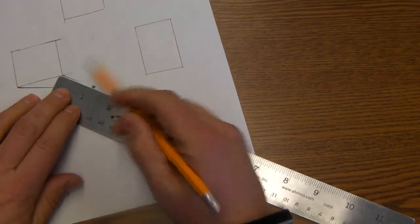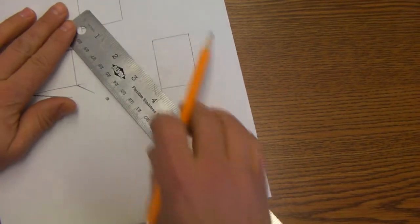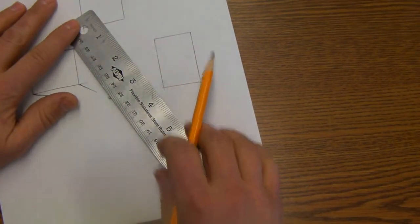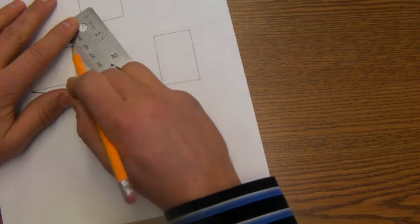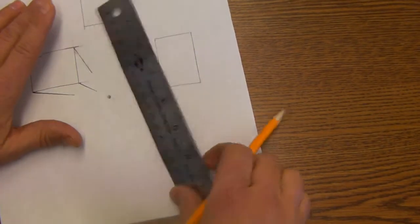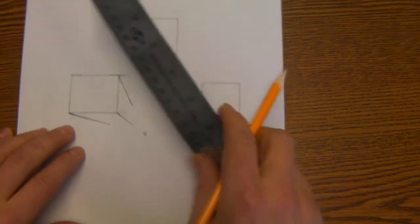I'm going to repeat that. Remember, try not to have your squares or your boxes, what will be your boxes, touch the vanishing point. Now we have our orthogonal lines drawn.